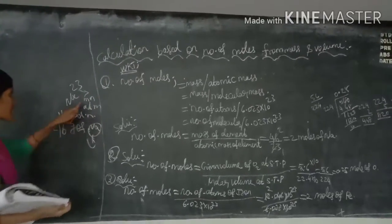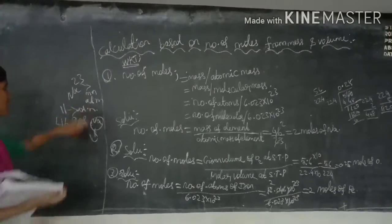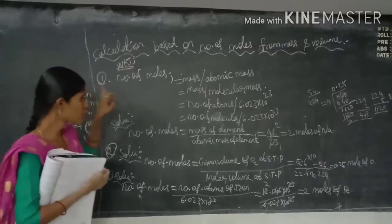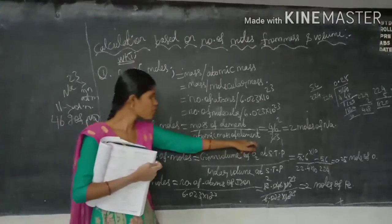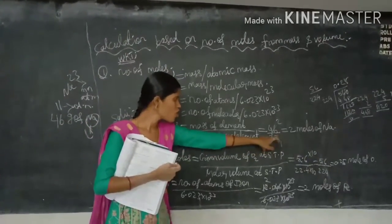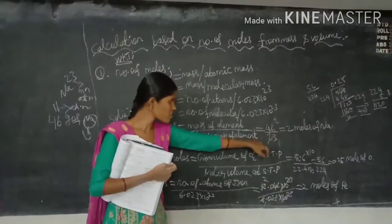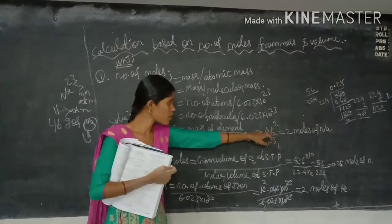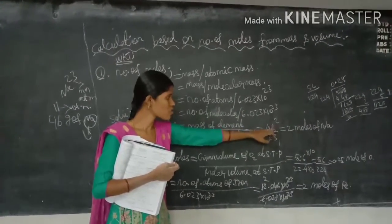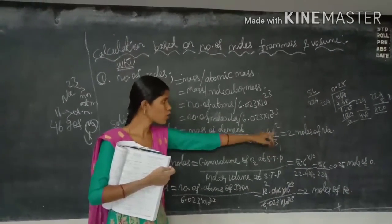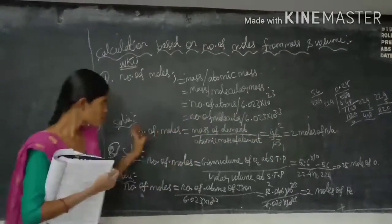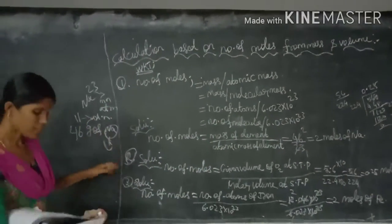The atomic mass of sodium is 23. So number of moles = 46 ÷ 23 = 2 moles of sodium. That is the answer to the first problem.